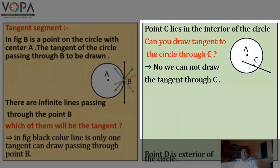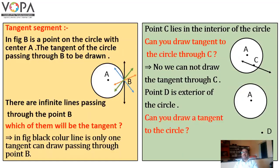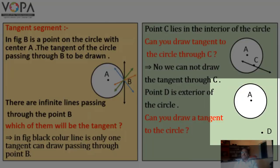Third figure: observe, point D is the exterior of the circle. In this figure, point D is the exterior point of the circle. Can you draw a tangent to the circle from point D?